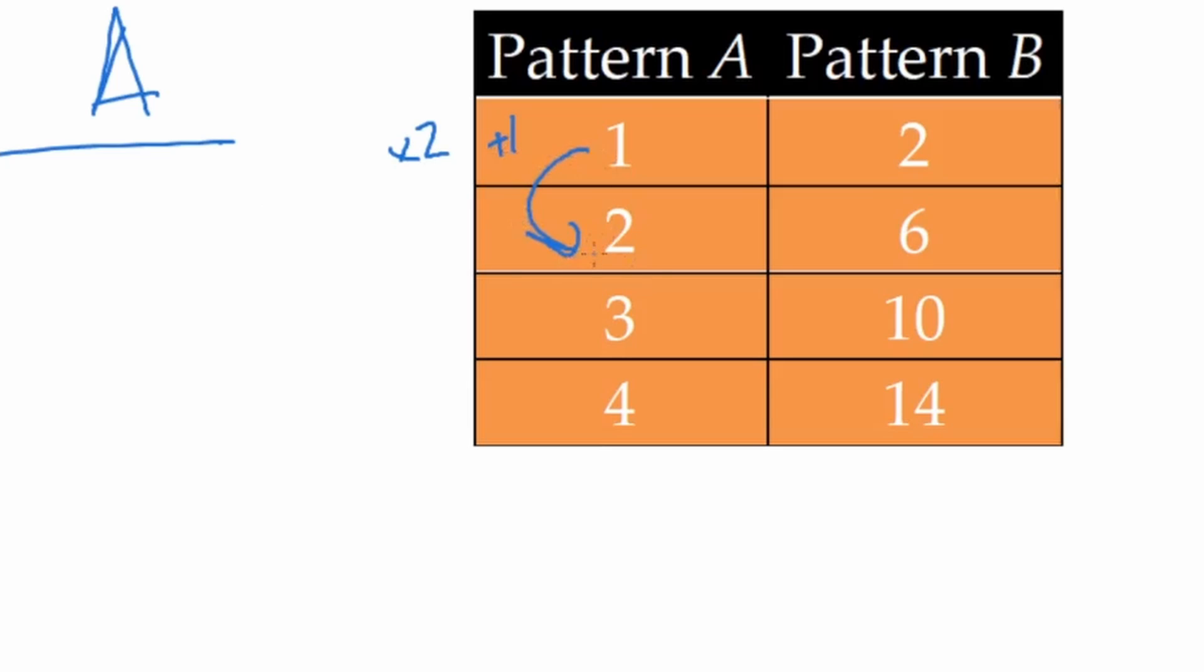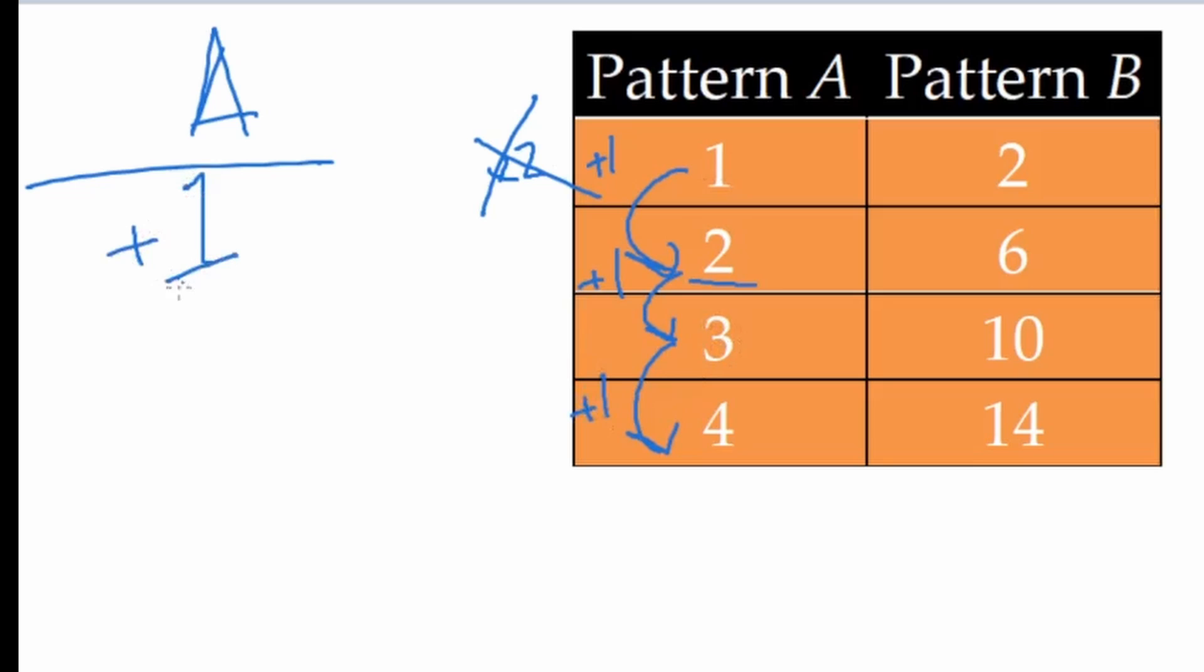But to figure out the rule, it has to be the same all the way down. So if we start here at two, to get to three, which of those works? Do we add one or multiply by two? Well, two plus one is three. So we are going to be adding one. Two times two is not three. So that's not going to be our rule. To test it out, let's try it on the next one. Three plus one does equal four. So our rule for pattern A is adding one plus one. That's our rule. Great.